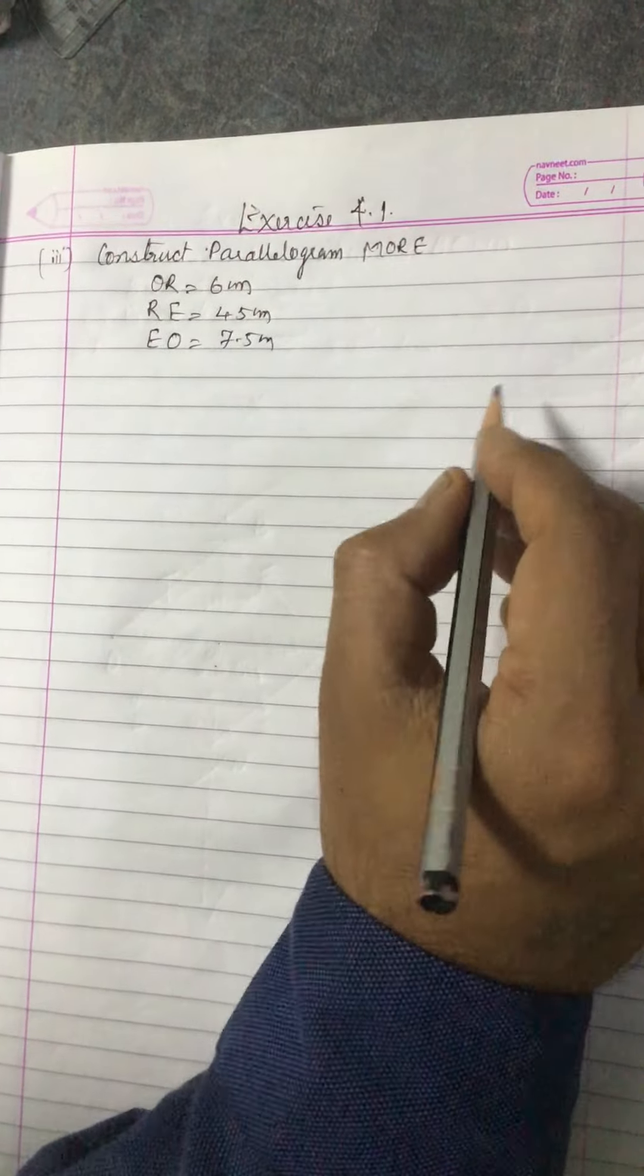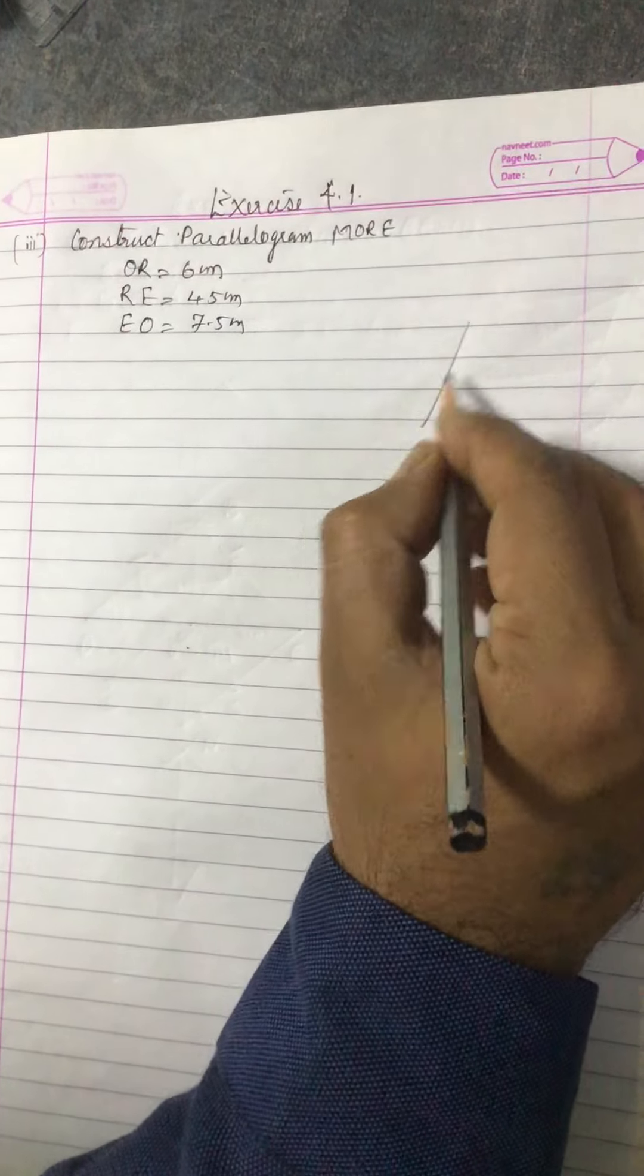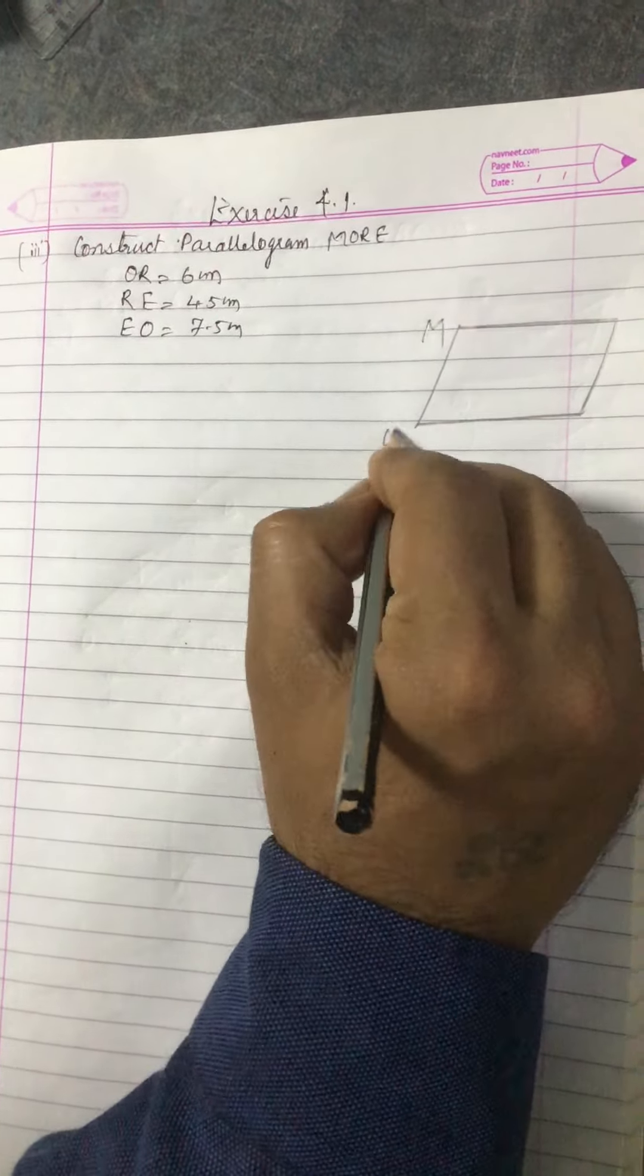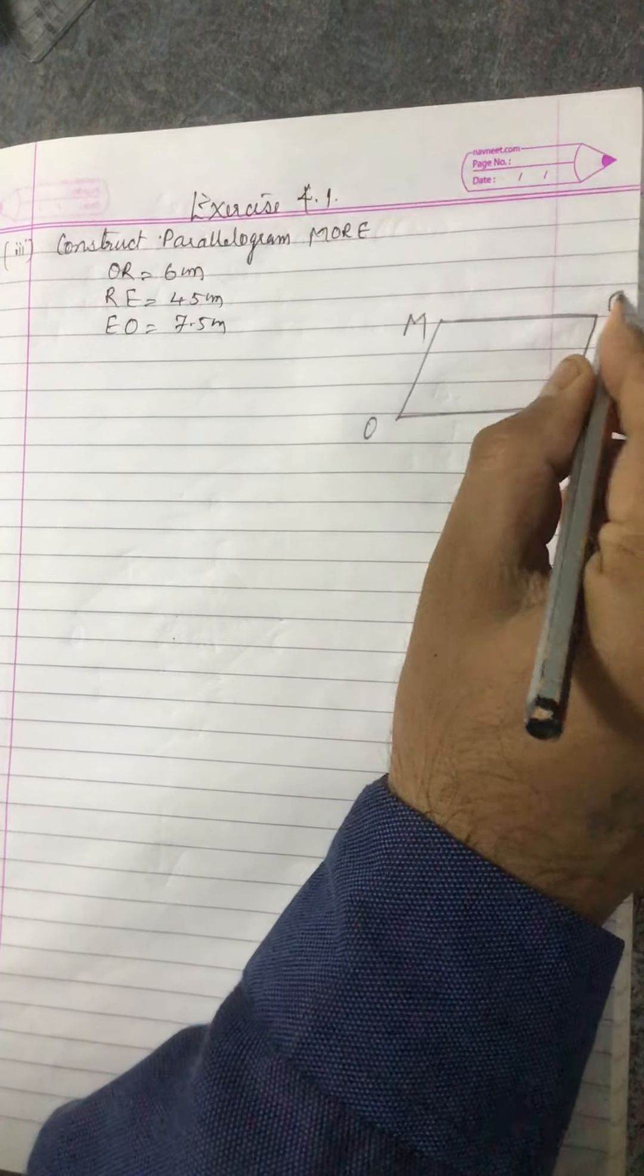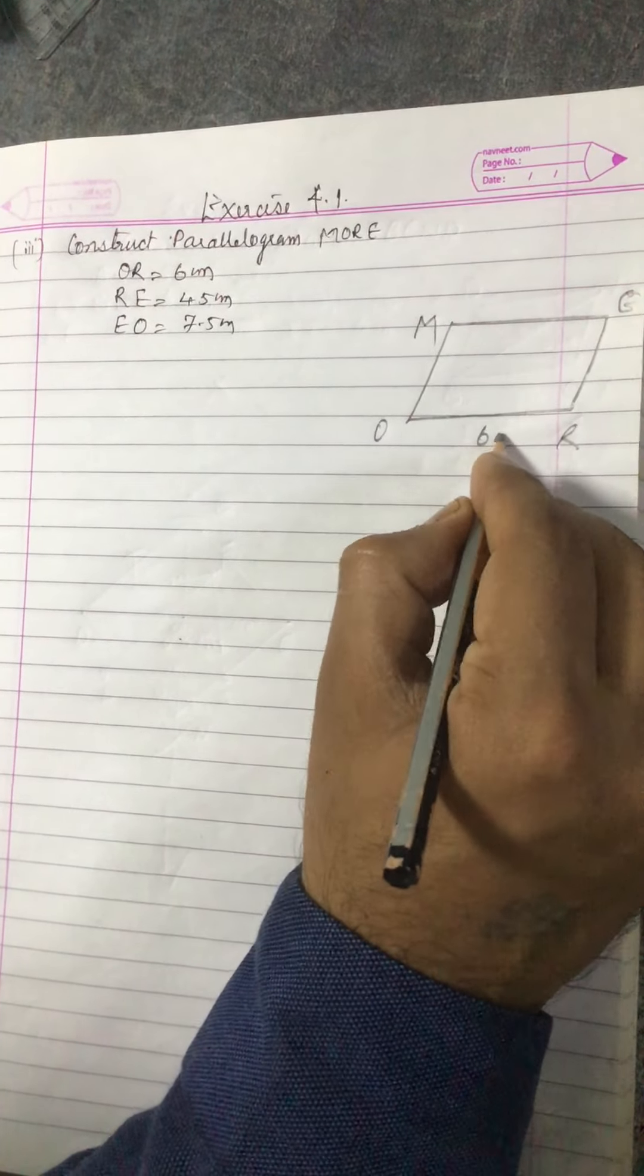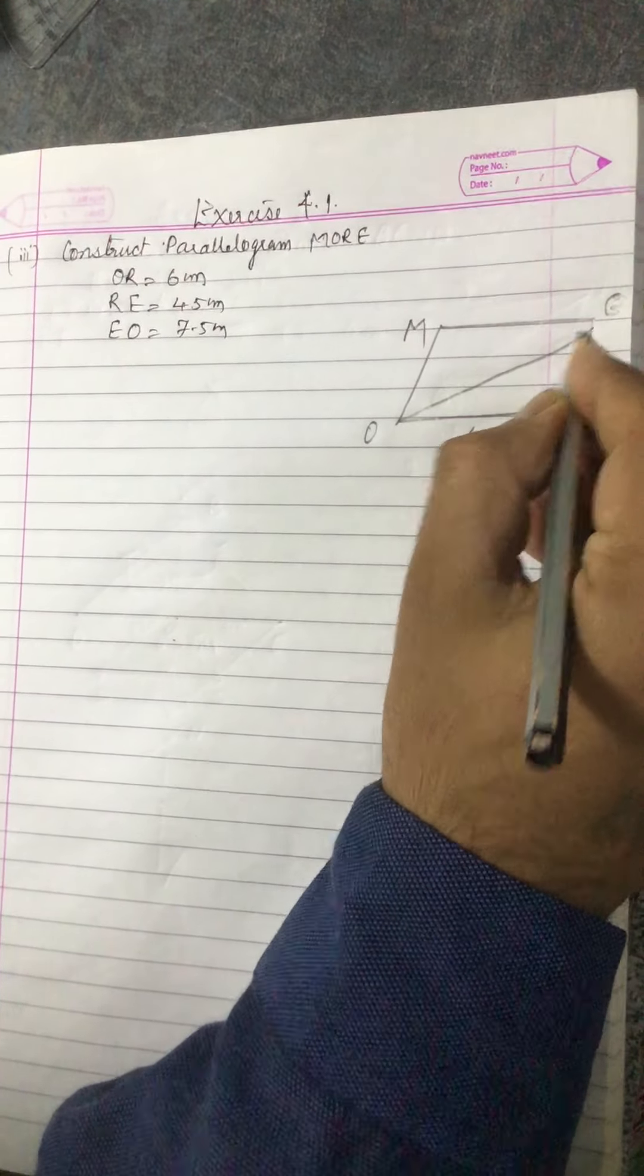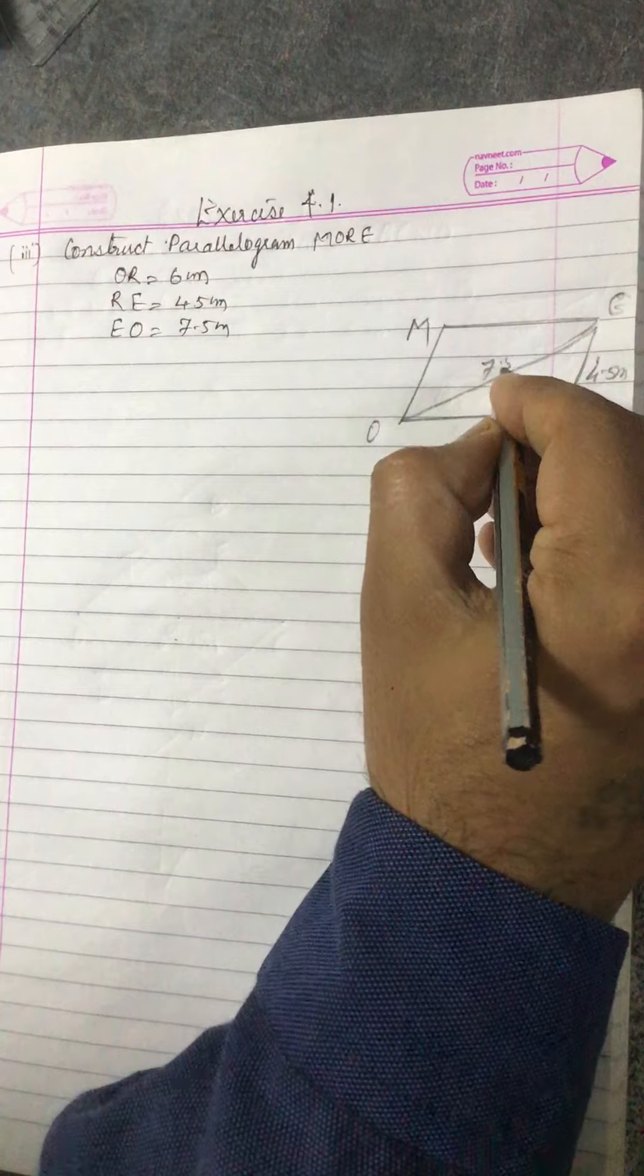Consider parallelogram MORE. OR is given 6 centimeter, RE is given 4.5 centimeter, EO is given 7.5 centimeter. So first you make the rough figure.